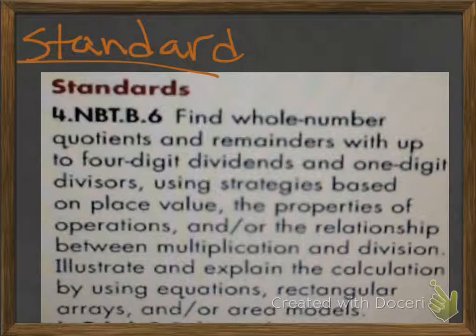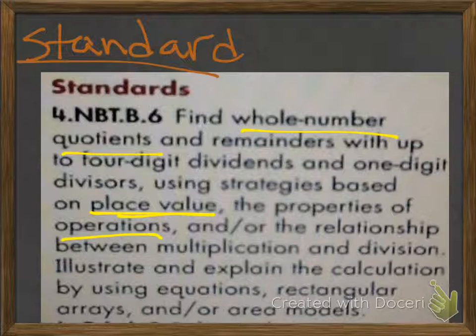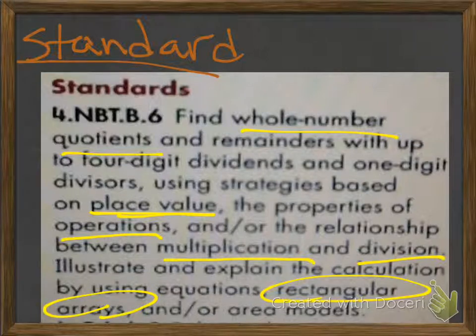Our standards: we're going to find whole numbers, quotients, and remainders with up to four-digit dividends and one-digit divisors, using strategies based on place value and the properties of operations and/or the relationship between multiplication and division, illustrate and explain the calculation by using equations, rectangular arrays, and/or area models.